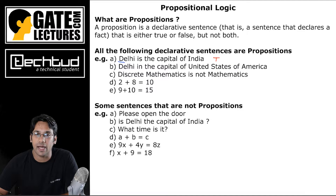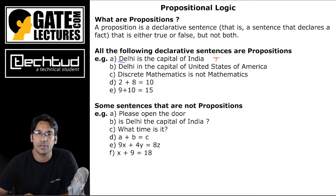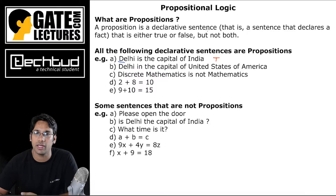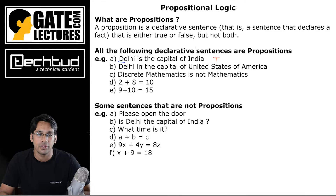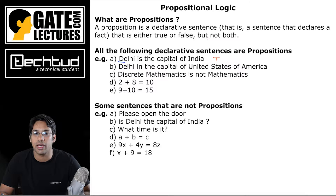If I say 'Delhi is the capital of the United States of America,' the truth value for this statement is false, but it is still a declarative statement and therefore still a proposition. Similarly, if I say 'Discrete mathematics is not mathematics,' the truth value is false, but it is still a proposition because it is a declarative statement.